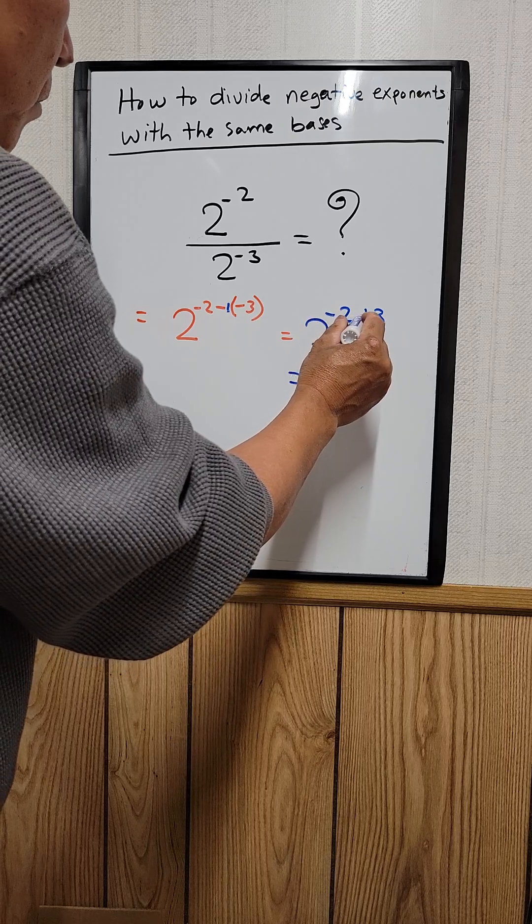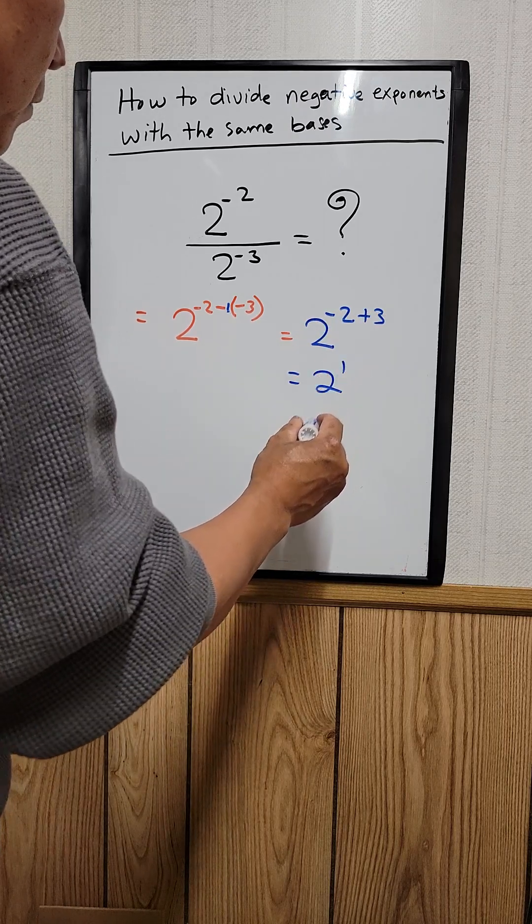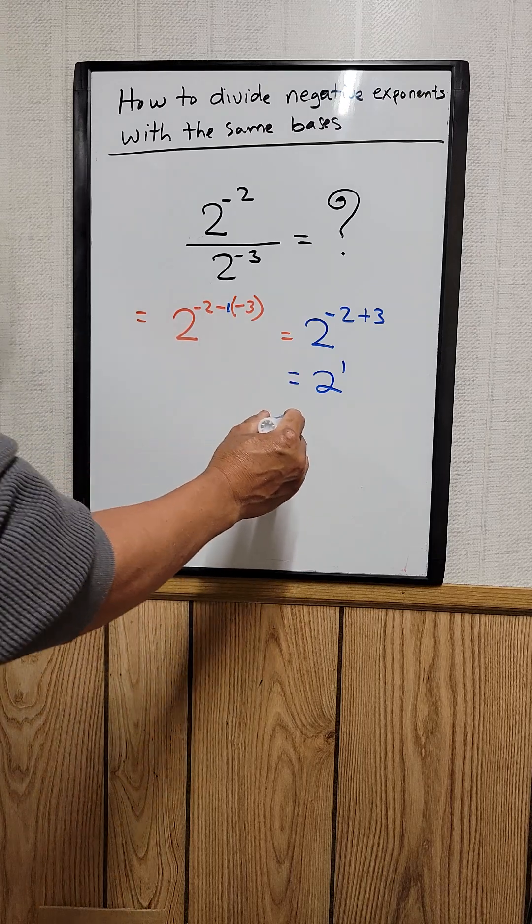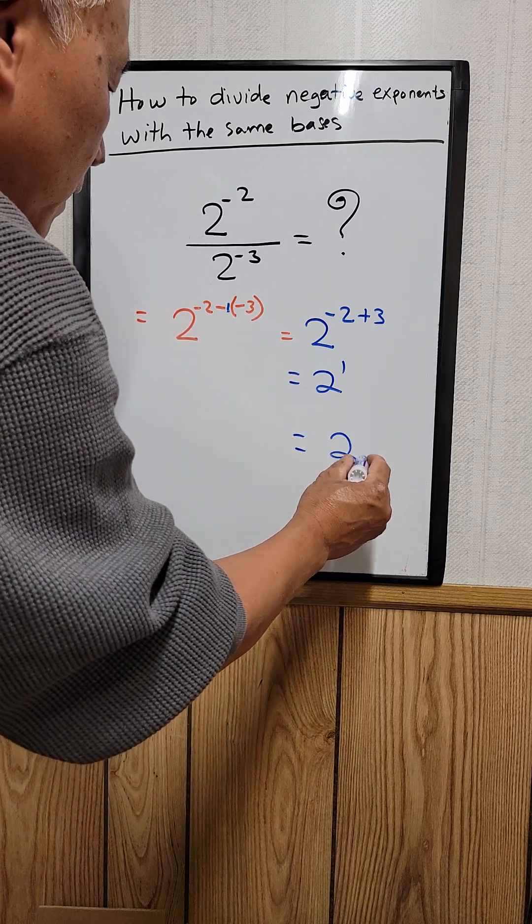So negative 2 plus 3 would be just 1. 2 to the first power which equals 2. That's your answer right here.